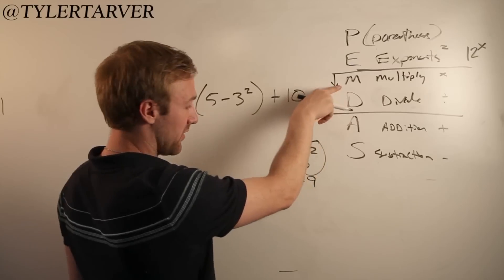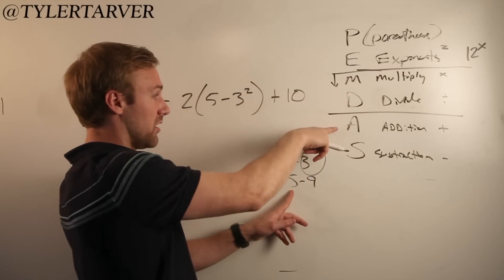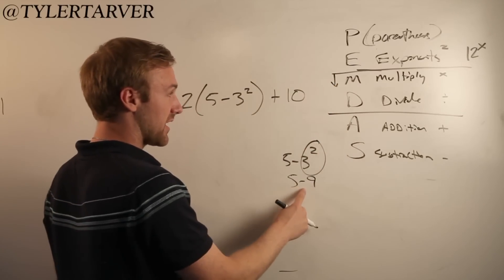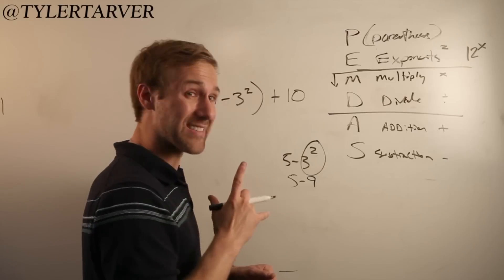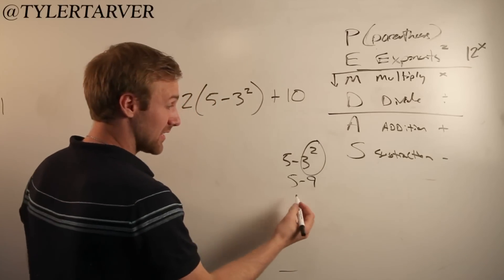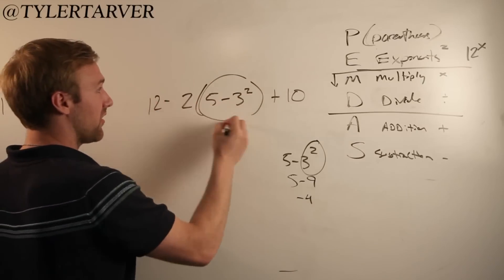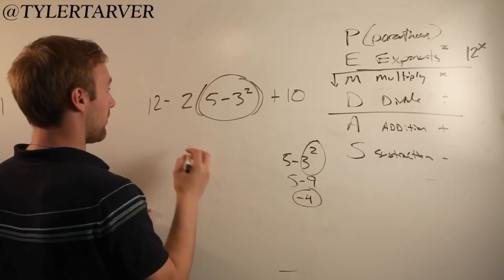Now we move down. Multiply, there's no multiplication, no division, no addition. There's subtraction. 5 minus 9 is what? 5 minus 9 is negative 4. Now I can replace all this with my negative 4.